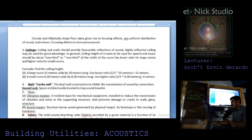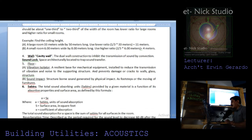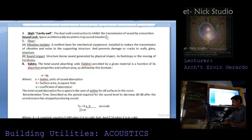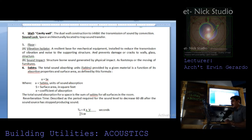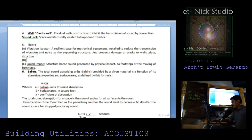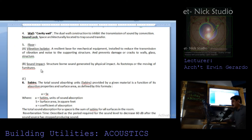For walls, cavity or dual wall construction inhibits the transmission of sound by convection. A sound lock is a space architecturally located to trap sound transfer. For the floor, provide a vibration isolator — a resilient base for mechanical equipment installed to reduce the transmission of vibration and noise to the supporting structure, preventing damage or cracks to walls, glass, and structure.